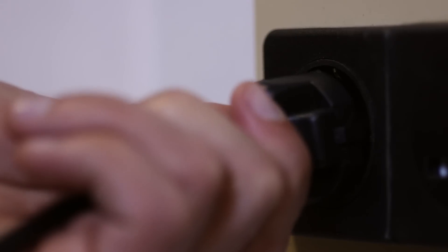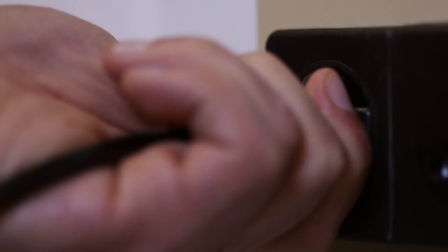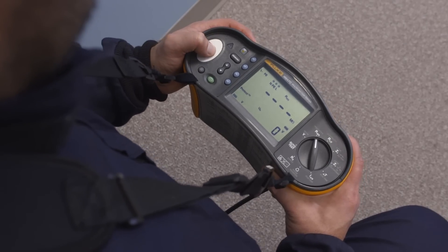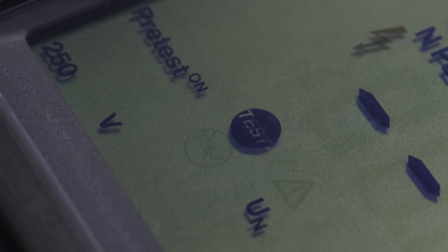If the tester detects an appliance connected to the system under test, the test immediately stops and a visual warning appears on the screen. You can work faster and safer without damaging valuable equipment.